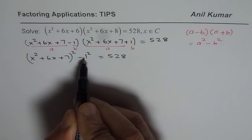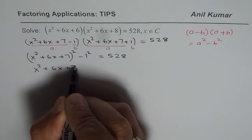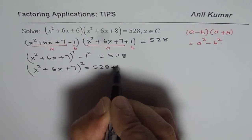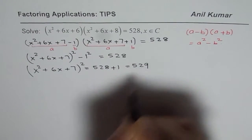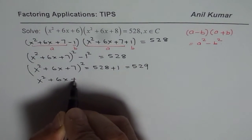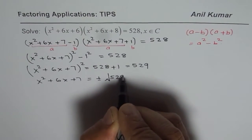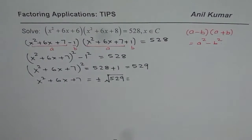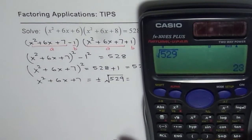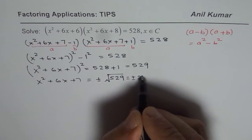Now we bring the 1 squared to the right side, so we get x squared plus 6x plus 7, whole squared, equals 528 plus 1, which is 529. Taking the square root of both sides, we get x squared plus 6x plus 7 equals plus or minus the square root of 529, and the square root of 529 is 23.